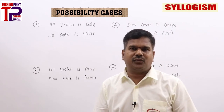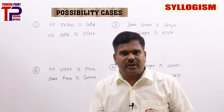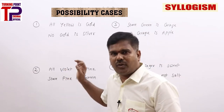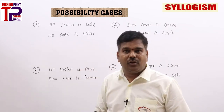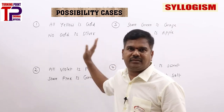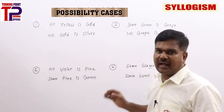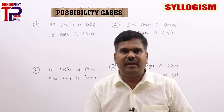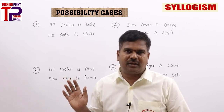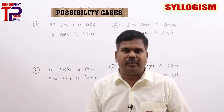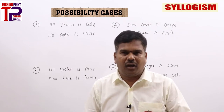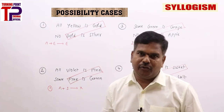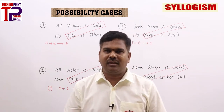We have worked out many problems in syllogisms: two statements two conclusions, two statements four conclusions, three statements four conclusions, four statements four conclusions. Write the conclusions and possibility cases on your own. Take your time and try to avoid mistakes — we will discuss in detail so you will be perfect in possibility cases. Later I'll give questions from previous year model papers and our material.